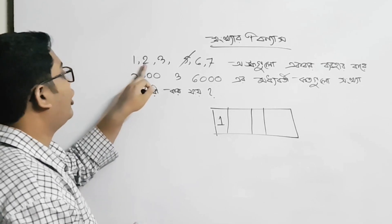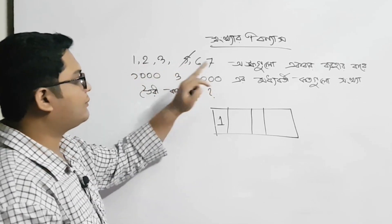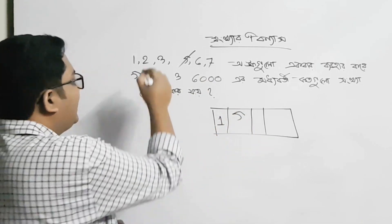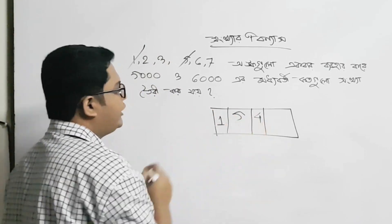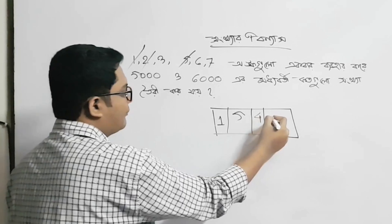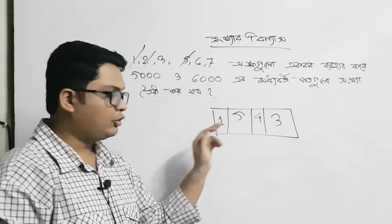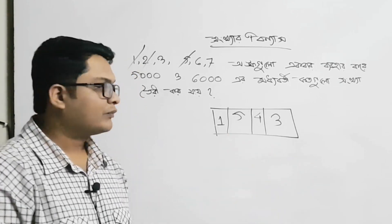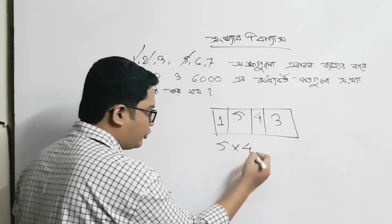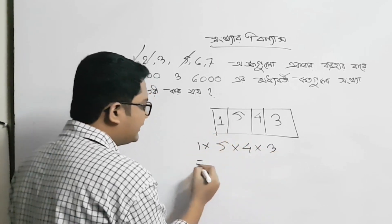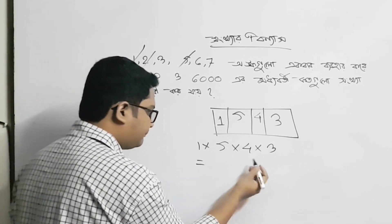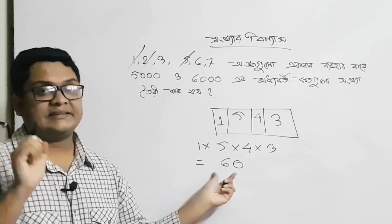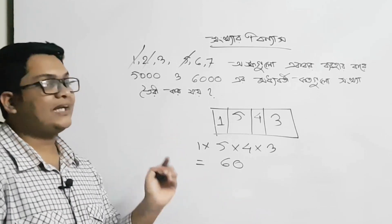পার্টি — অর্থাৎ এক বস্তে বারো, অথবা দুটো বস্তে, অথবা ছয় বস্তে পারবে। আমার টোটাল পাঁচটি অপশন। আমার একটি বসে গেলে ৬০, তাহলে আমার এরকম টোটাল ৬০টা সংখ্যা গঠন করা যাবে।